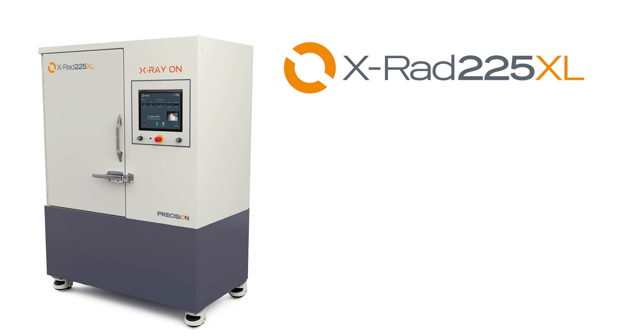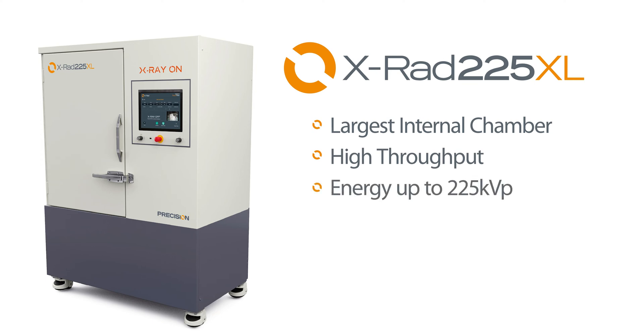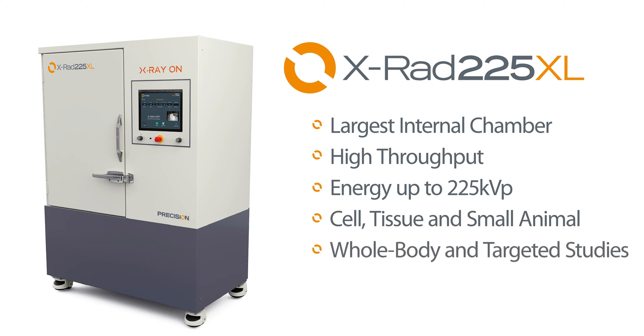Designed for biological or small animal irradiation, the X-RAD 225 XL has the largest inner chamber, allowing the highest throughput. With energy up to 225 kV, it's the ideal choice for larger cell and tissue cultures, and small animal studies, including whole body and targeted applications.